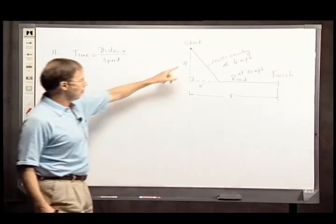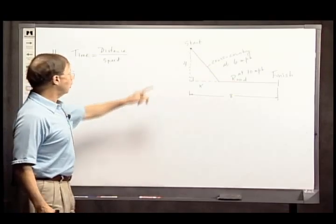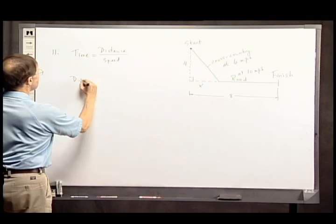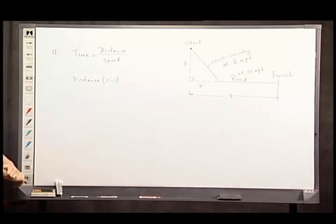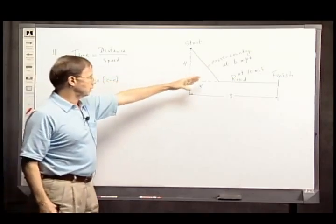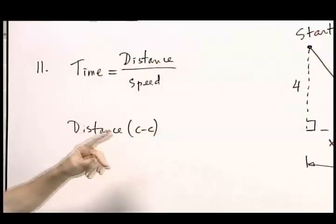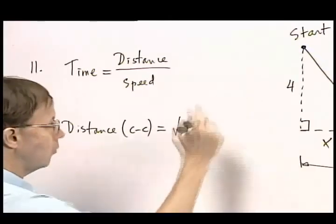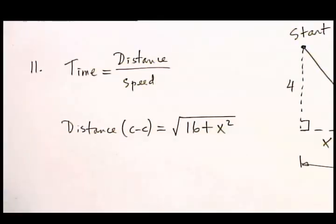This is the hypotenuse of a right triangle. So the distance cross-country, I'm gonna call it CC just for an abbreviation. It's the hypotenuse: this squared plus this squared equals this squared. So the total length of this piece is the square root of 4 squared plus x squared. How much time is devoted to this piece?